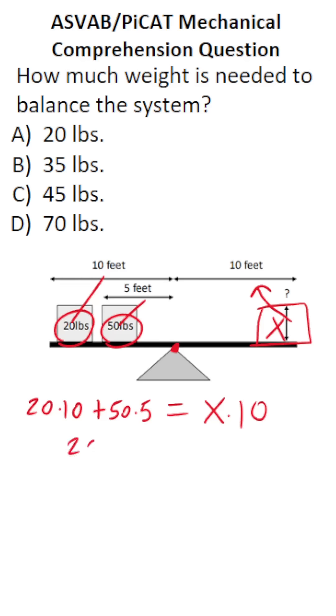20 times 10 is 200 plus 50 times 5, which is 250, equals 10 times x is 10x. 200 plus 250 is going to be 450 equals 10x.